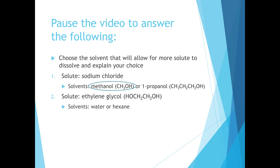In example number two, the solute ethylene glycol has two polar regions — an OH group on either side of the molecule. As a result, it will dissolve well in a solvent that is also polar. Between water and hexane, water is the most polar and will create hydrogen bonds between the water molecules and the ethylene glycol.